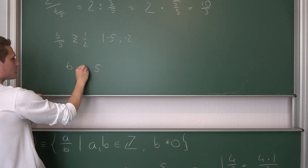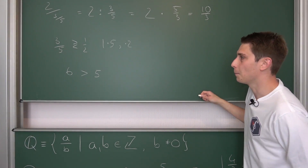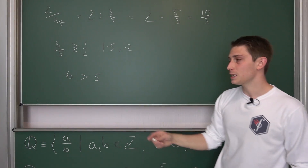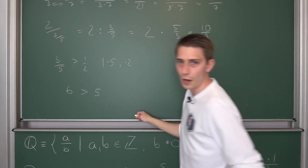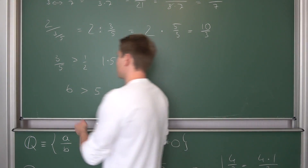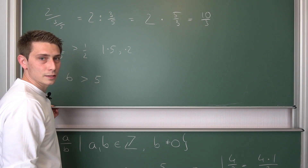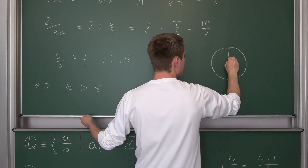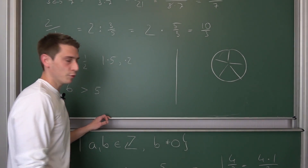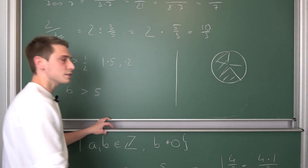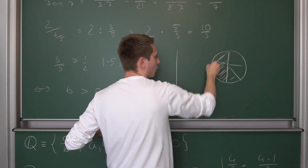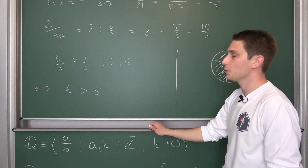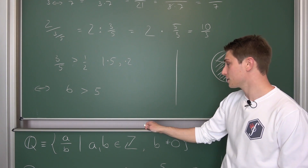Since 5 is less than 6, and those steps are all equivalent reformulations, you can divide by those factors again going backwards to conclude that 3 over 5 is greater than 1 half. This also makes sense visually: if you split a cake into 5 pieces and take 3, you have more than if you just took half the cake. So half is less than 3 over 5 — it makes perfect sense.